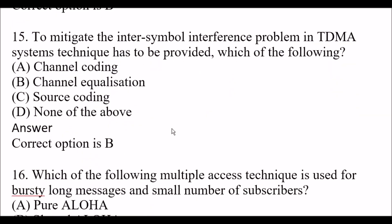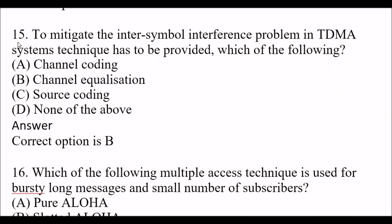Next question: To mitigate the inter-symbol interference problem in TDMA systems, which technique has to be provided? Option A: channel coding. Option B: channel equalization. Option C: source coding. Option D: none of the above. The right answer is Option B, channel equalization.